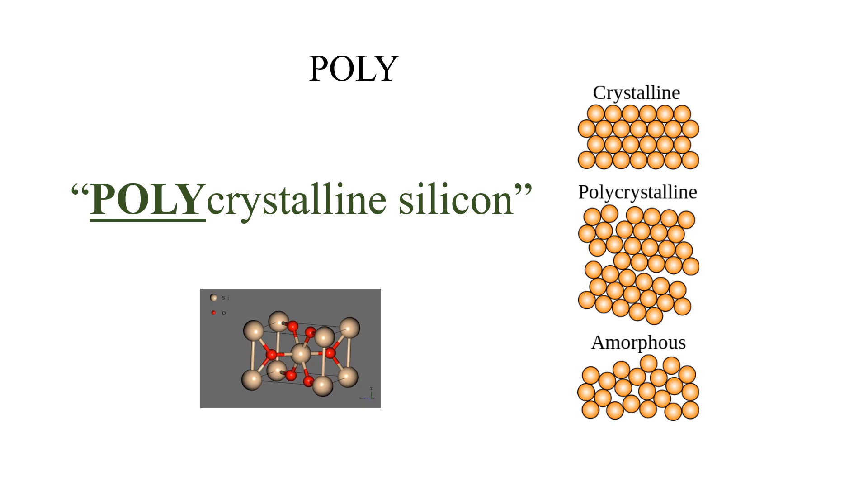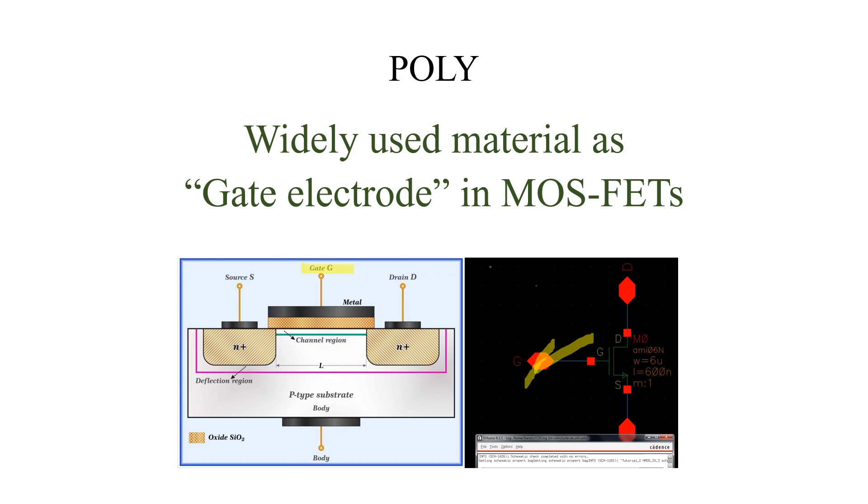Poly is a widely used material as gate electrode in MOSFETs. If you can see in the cross-section, this is a gate, and basically this is the poly routine. Earlier they used to use metal, now it's polycrystalline silicon. In the symbol, this is a gate structure.